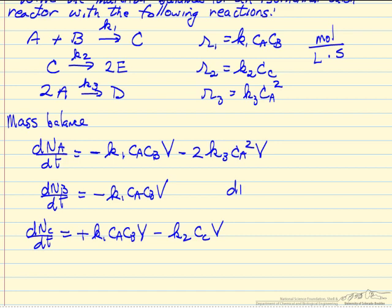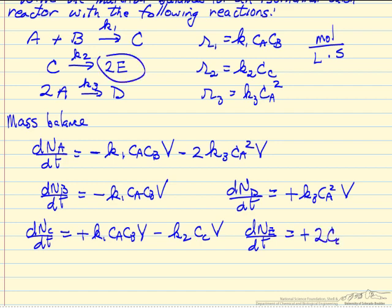And then we have the change in number of moles with respect to time. D is only involved in the third reaction, a plus sign: K3 CA squared times the volume. And then the change in number of moles of E with respect to time - E is formed in the second reaction and it has a stoichiometric coefficient, notice here, of 2: concentration of C times the volume.